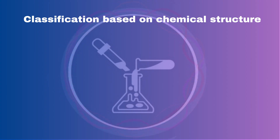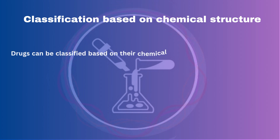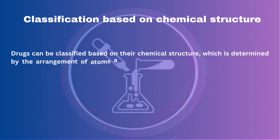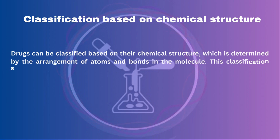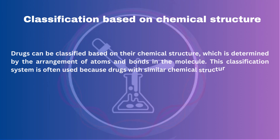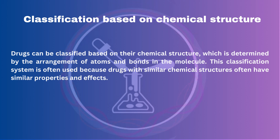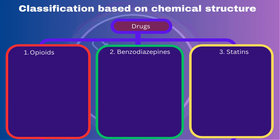Classification Based on Chemical Structure: Drugs can be classified based on their chemical structure, which is determined by the arrangement of atoms and bonds in the molecule. This classification system is often used because drugs with similar chemical structures often have similar properties and effects. Examples of drug classes based on chemical structure include opioids, benzodiazepines, and statins.